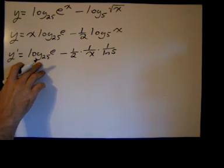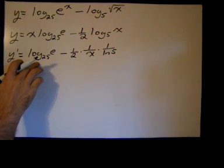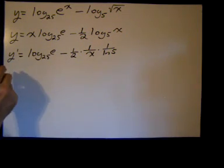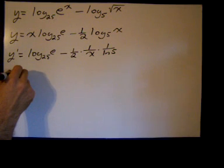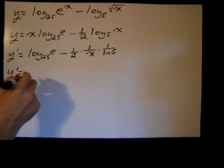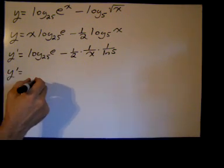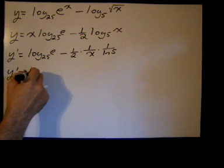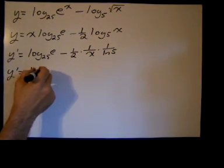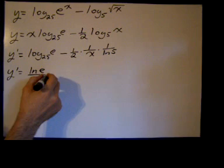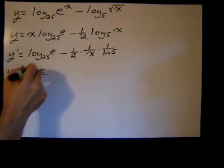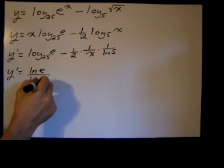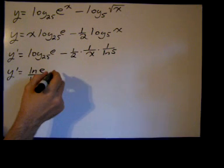I see I could use the change of base formula right here to rewrite this log of base 25 of e, although I don't know if you'd really want to do this. I'm just going to use the natural log because I have an e here, makes sense. Natural log of e over the natural log of the base, which is the natural log of 25, which is actually 5 squared.